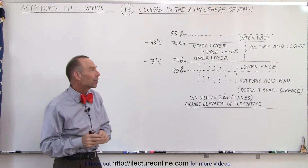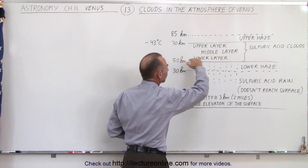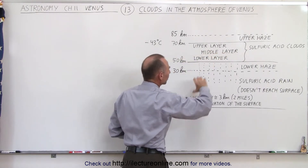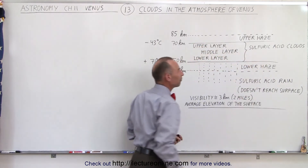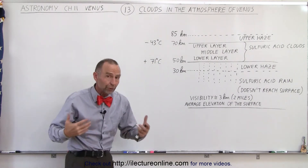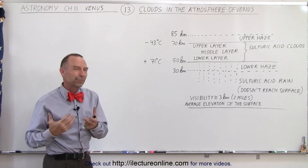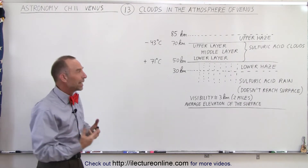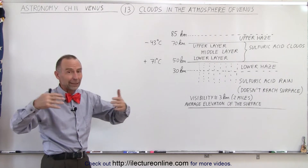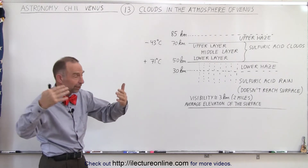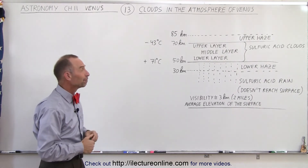There are three distinct layers: an upper layer, a middle layer, and a lower layer. All of these clouds are primarily made of sulfuric acid — they're sulfuric acid clouds. And they produce sulfuric acid rain. Just like on Earth we have clouds that rain water, on Venus we have clouds that rain sulfuric acid.